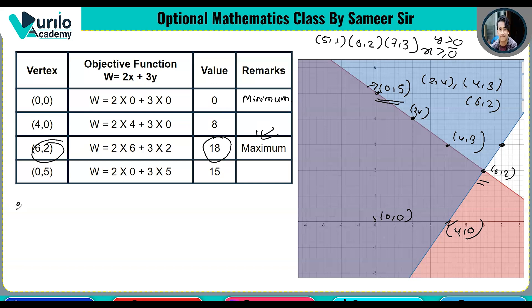Therefore, the maximum value is 18 at the point (6,2).